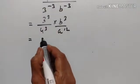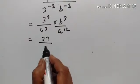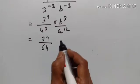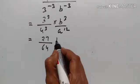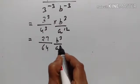3 cube is equal to 27. 4 cube is equal to 64. So the answer is b cube upon a to the power of 12, with 27 upon 64.